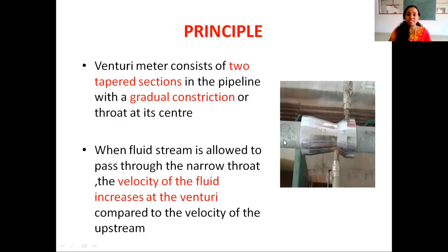When a fluid stream is allowed to pass through this narrow constriction, the velocity of the fluid in this region will increase. Whenever this velocity increases, the pressure energy decreases. Flowing fluid is associated with three types of energy: the first one is pressure energy, the second one is potential energy, and the third one is kinetic energy.